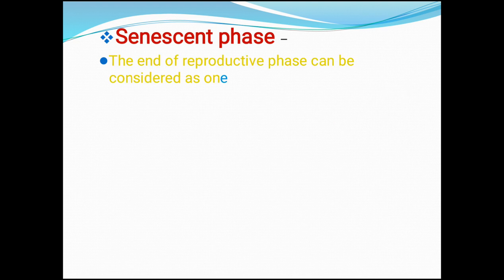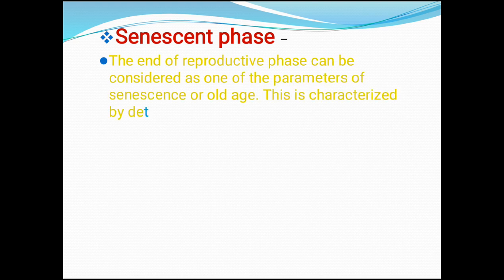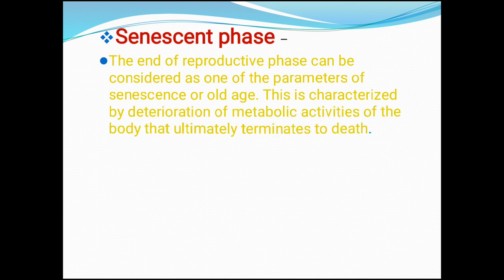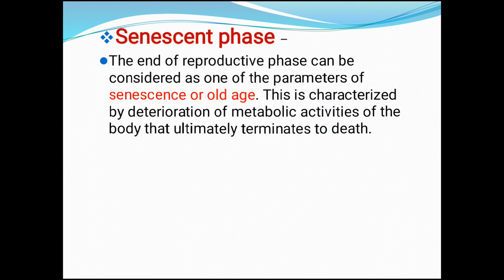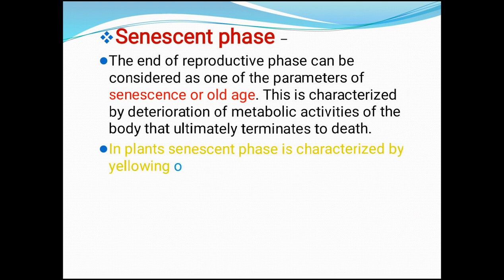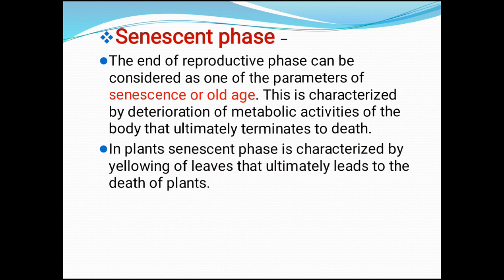The end of the reproductive phase can be considered as the beginning of senescence or old age. The senescent phase is characterized by deterioration of metabolic activities of the body that ultimately terminates in death. In plants, the senescent phase is characterized by yellowing of leaves that ultimately leads to the death of the plant.